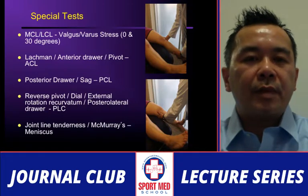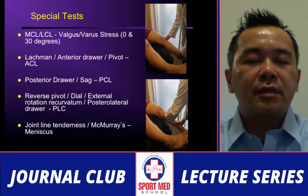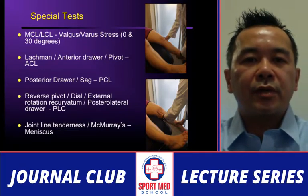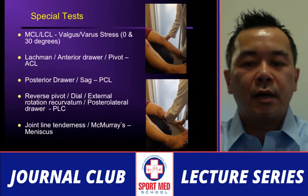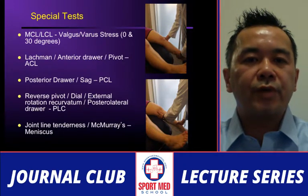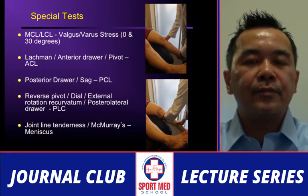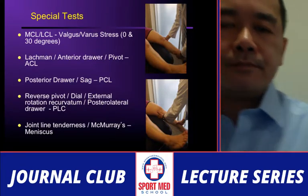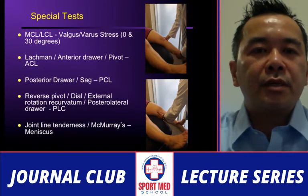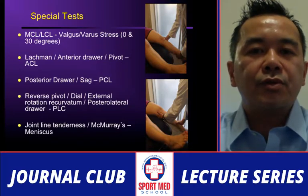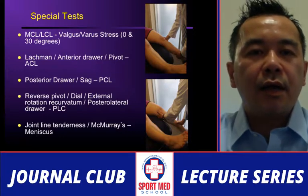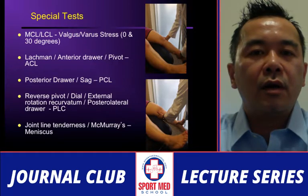For special testing, test for stability with MCL and LCL at zero degrees and 30 degrees. At 30 degrees you unlock the bony conformity and test specifically for the MCL and LCL. Stabilize the thigh on the table — for bigger patients it's easier to stabilize the thigh and focus on the knee. Support the ankle and tibia with your hand, perform varus and valgus stressing, look for opening, and compare to the contralateral side if unsure.